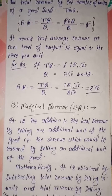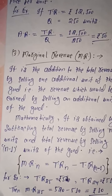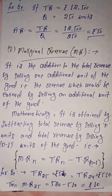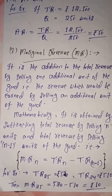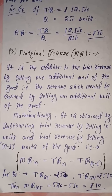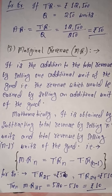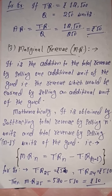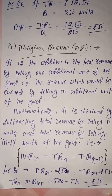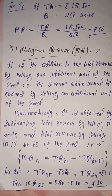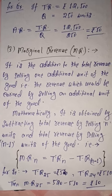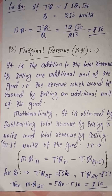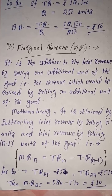Now come to the third concept: marginal revenue. What is marginal revenue? 'Marginal' means additional. When we sell one additional unit of a good, the difference that occurs in total revenue — or the value by which total revenue increases — is known as marginal revenue. It means the addition to the total revenue by selling one additional unit of the good is known as marginal revenue. In other words, the revenue earned by selling an additional unit of the good — that additional revenue — is known as marginal revenue.